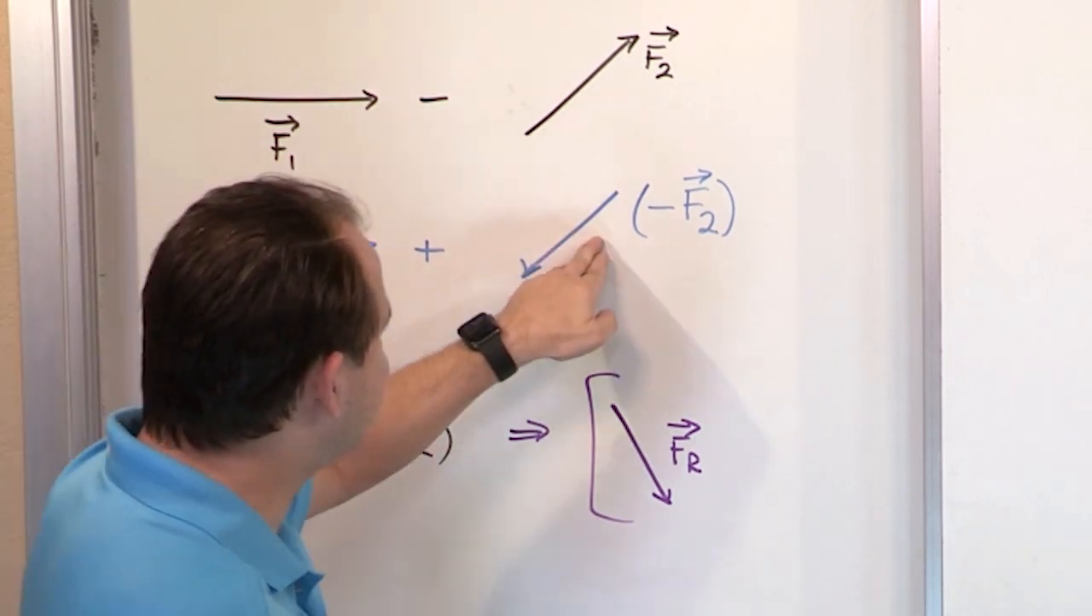So anytime you see subtraction of vectors, what you have to do is add. But when you add, you flip around the direction, keeping the exact same orientation and direction. Or I guess I should say the angle stays the same and the length stays the same. You just change it around as far as which side the arrow has.